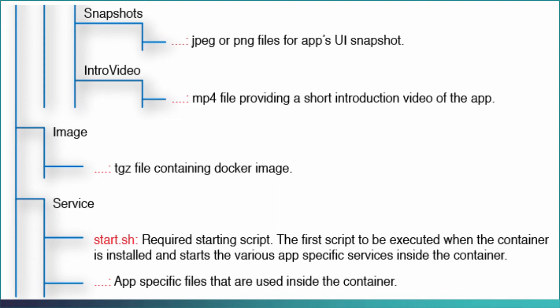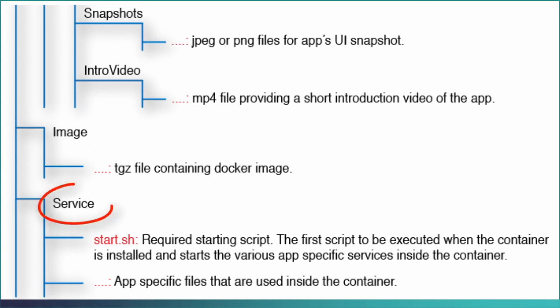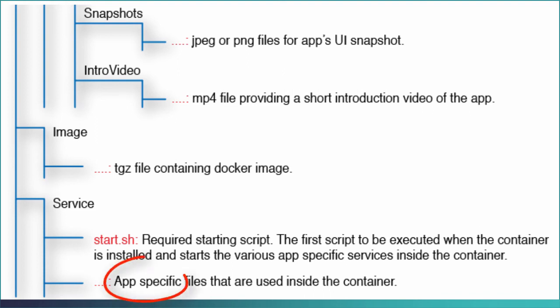For a stateful app, you also need to include two additional folders. The first is an image folder containing the Docker image for the application — a Docker image contains all the packages required by the app to implement the backend. The second is the service folder, which includes the start.sh file containing the first script executed after the Docker container is installed, starts the various app-specific services inside the container, and the app-specific files used inside the container.